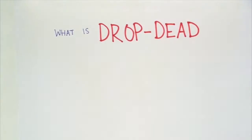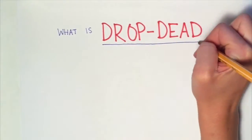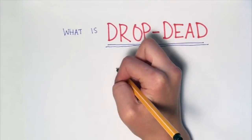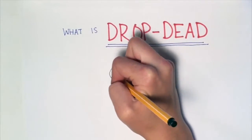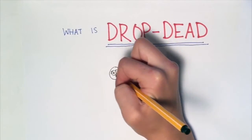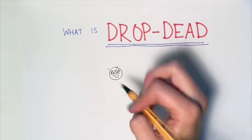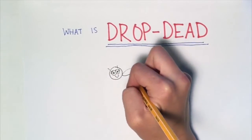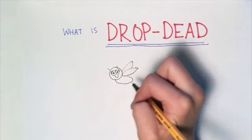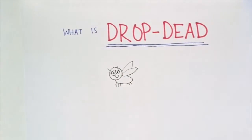What is drop dead? Drop dead, also known as DRD, is a gene in Drosophila melanogaster that is thought to be an essential part of the pathway for epithelial barrier formation.